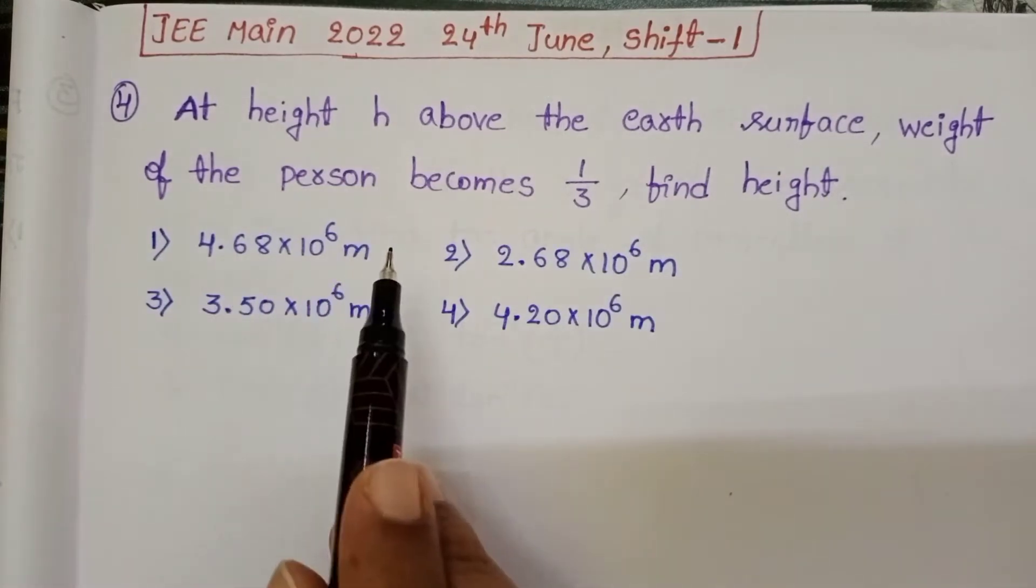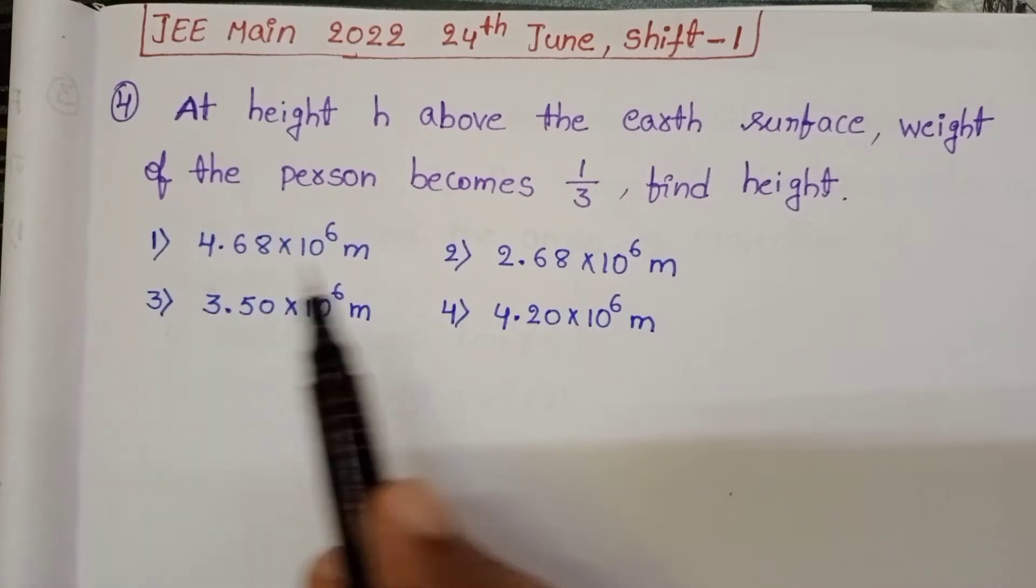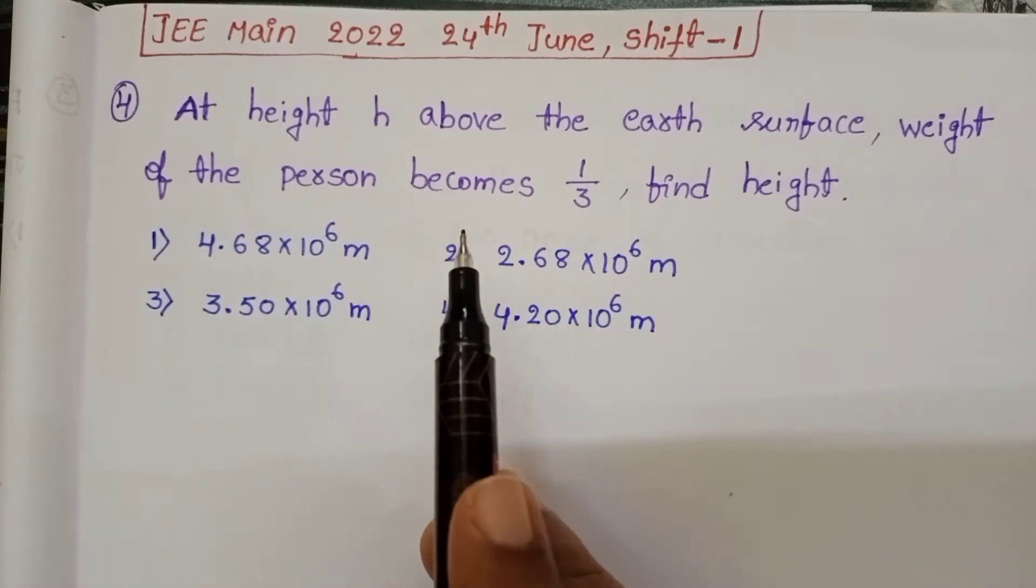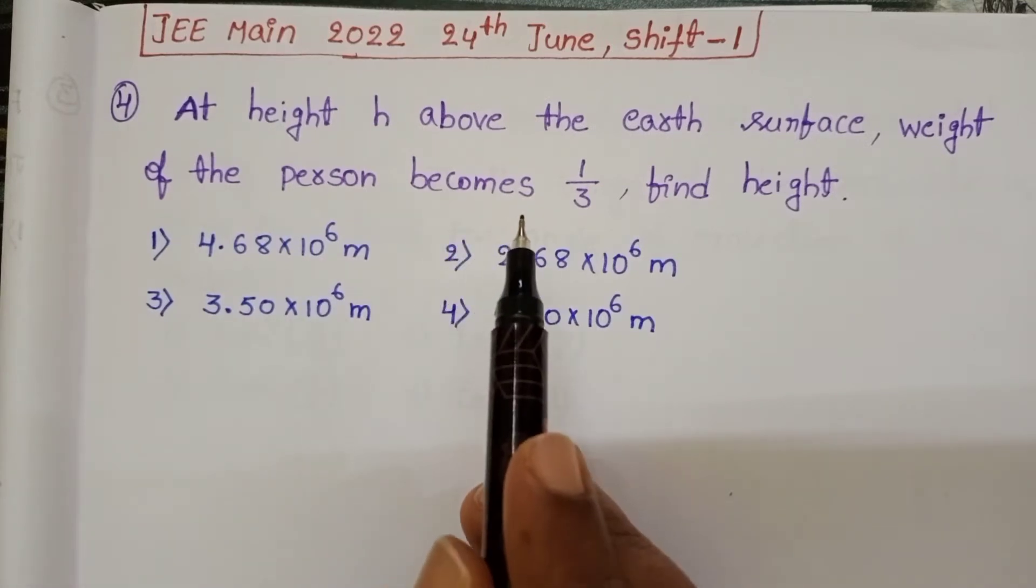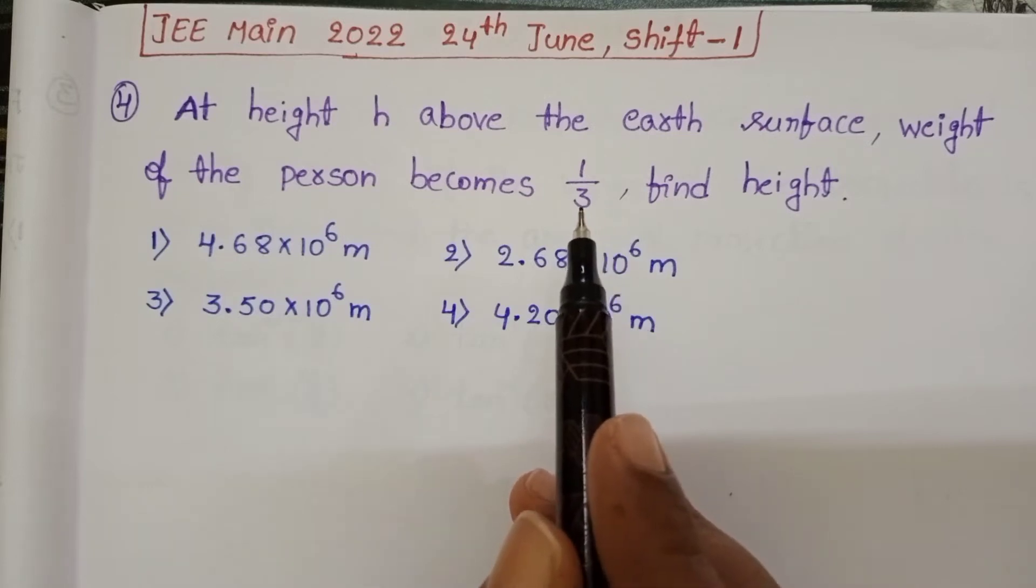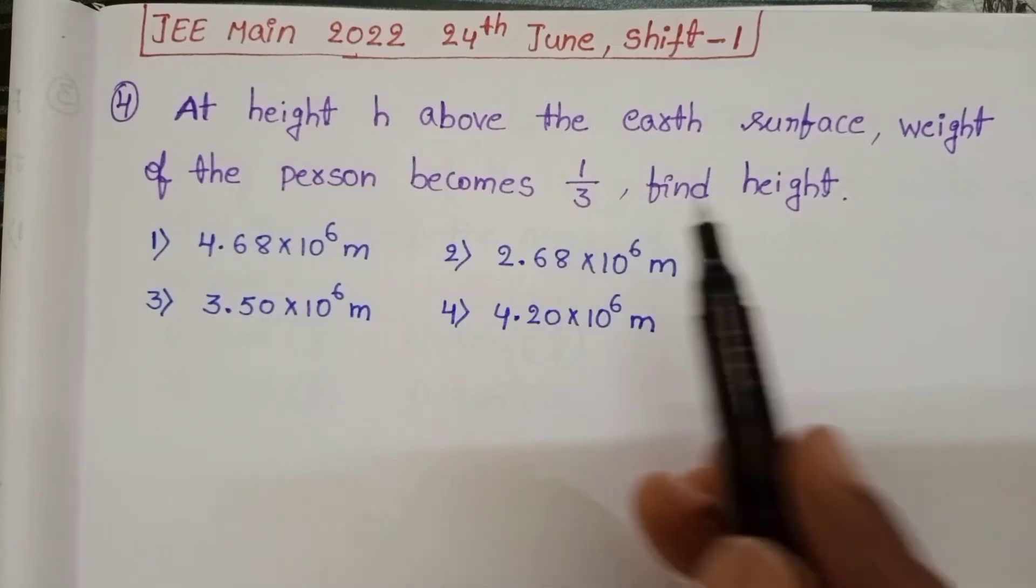This question is from gravitation chapter. We know mass of the person remains constant, but acceleration due to gravity changes from place to place.